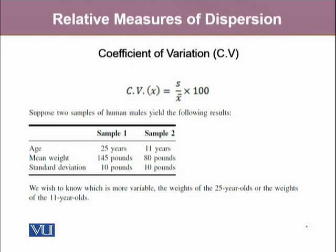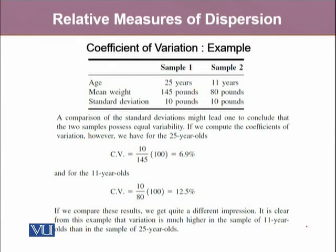The coefficient of variation is the ratio of the standard deviation to the arithmetic mean, multiplied by 100. In two data sets — group 1 with mean age 25 years and group 2 with mean age 11 years — both have a mean weight of 145 pounds and 80 pounds respectively, with standard deviations of 10 pounds each. Both samples have the same standard deviation but different mean weights. The coefficient of variation for group 1 is 6.9% and for group 2 is 12.5%, showing that variation is much higher in the 11-year-olds than in the 25-year-olds.